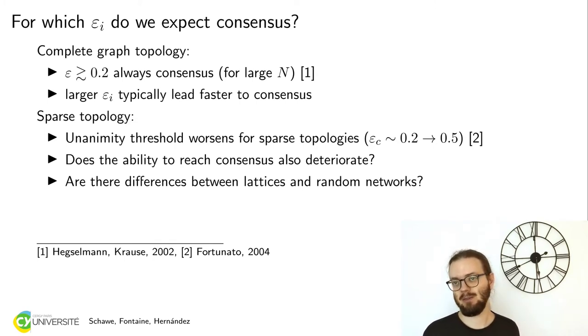Now the question is, does it behave the same as unanimity or maybe not? Spoiler alert, it's much different from unanimity. Also we want to ask, is there a difference between lattices and random networks? Because under unanimity there was none, every sparse network had the same threshold.